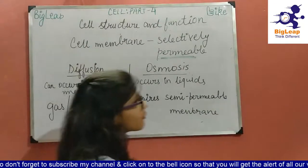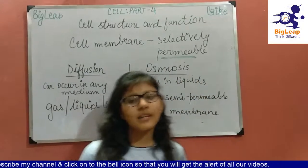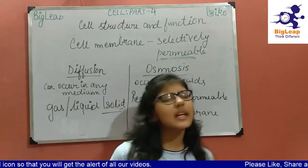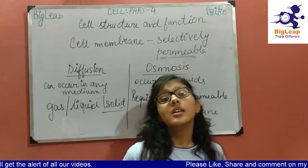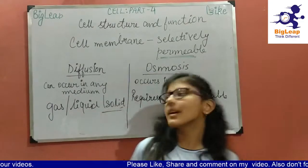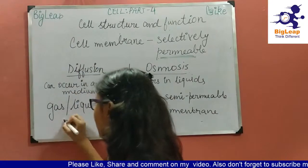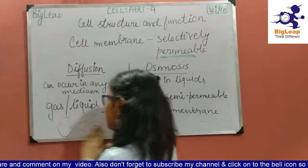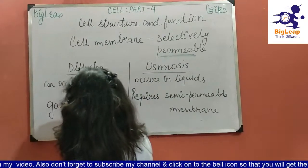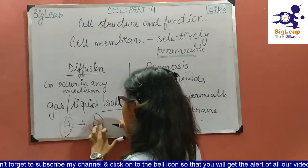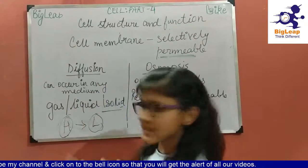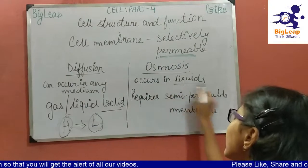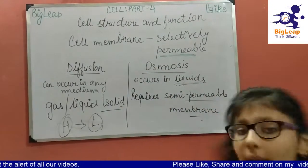For example, when your mother cooks food in the kitchen, the delicious smell spreads all over the house — that is diffusion. Diffusion moves substances from an area of high concentration to low concentration, can occur in any medium, and does not require a semi-permeable membrane, unlike osmosis.